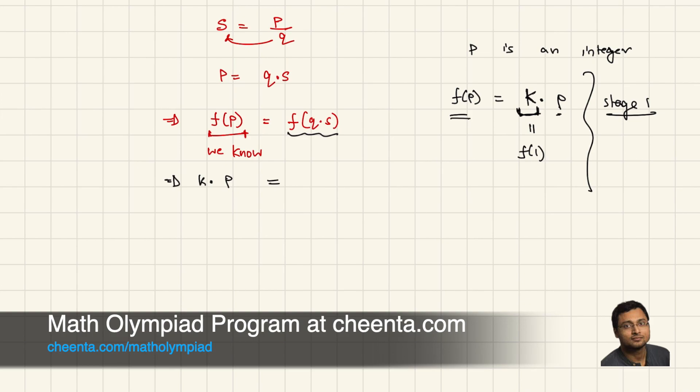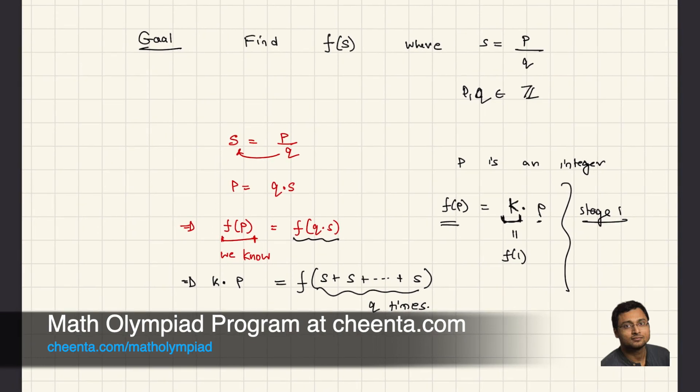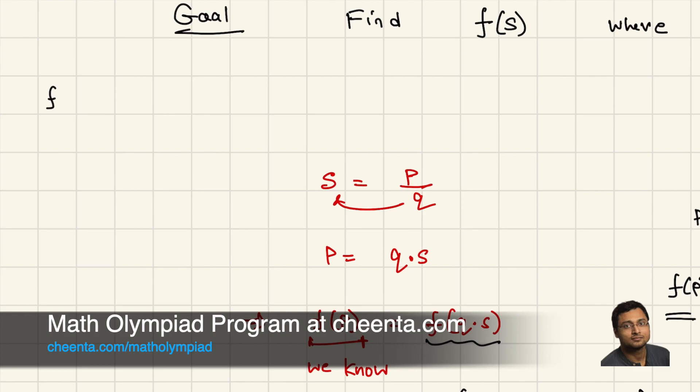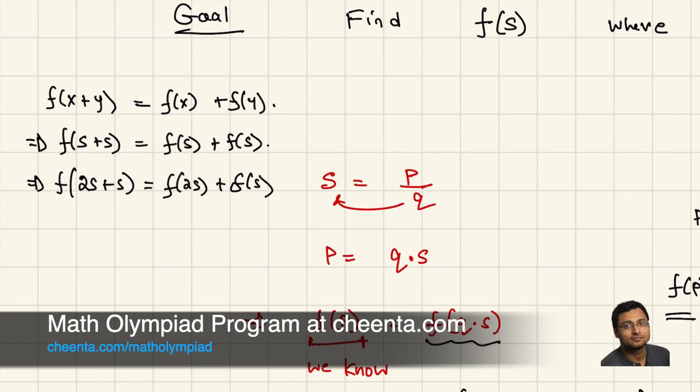And what is f(Q times S)? Now, this is where we will be using the functional equation directly. So, f(Q times S) is f(S + S + S) Q times. Right? Now, what is the functional equation that we have? Let me write this here. We have f(x + y) equals to f(x) + f(y). So you can easily see this that if I do f(S + S), this is f(S) + f(S). Similarly, if I had f(2S + S), that is f(3S). This is f(2S) + f(S). But this is 2S. So this is again f(S) + f(S).